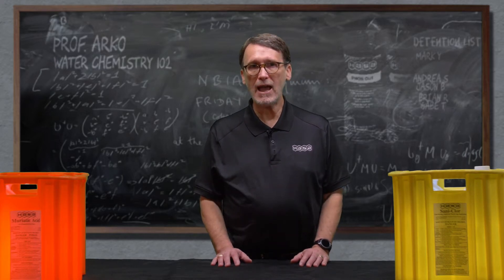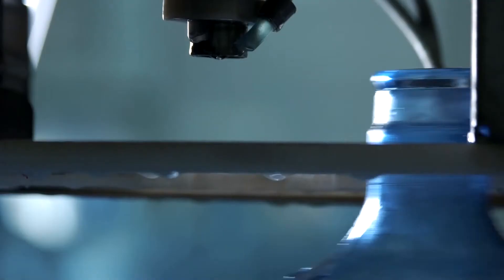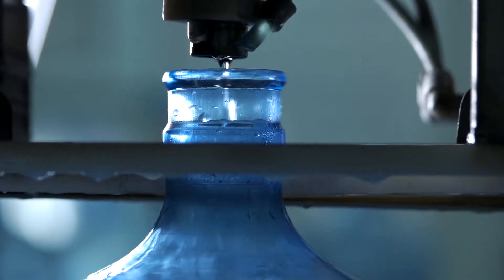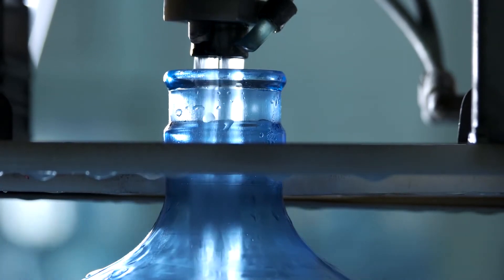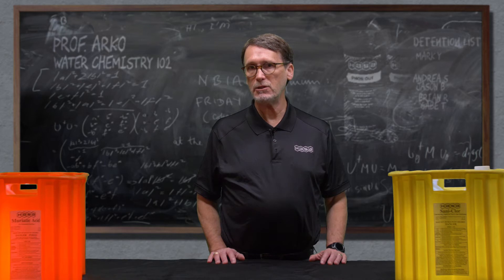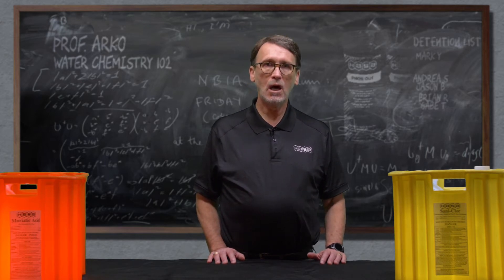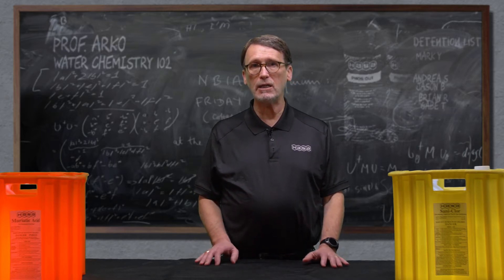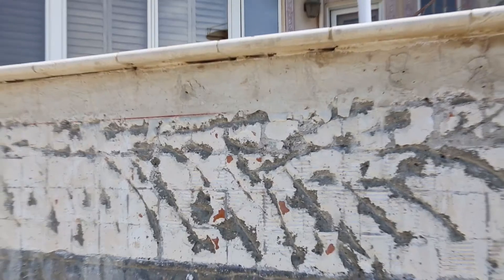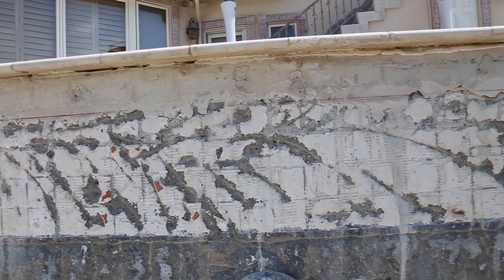The regular use of sulfuric acid leads to an increase in sulfates in the water. EPA guidelines for drinking water limit the levels of sulfates to 250 parts per million. Sulfate is considered a secondary contaminant because it creates taste and odor issues. An overlooked fact about sulfuric acid is that when used regularly, it can cause increased sulfates, which can lead to the destruction and erosion of all cement surfaces.